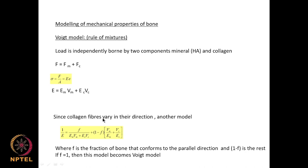However, the collagen fibers are not all distributed in the same direction — they vary in their direction. So there is another model where f is the fraction of the bone that conforms to the parallel direction and (1−f) is the rest. If f equals 1, this reduces to the Voigt model. So a fraction following the parallel direction uses the Voigt model, whereas the remaining portion does not follow it.